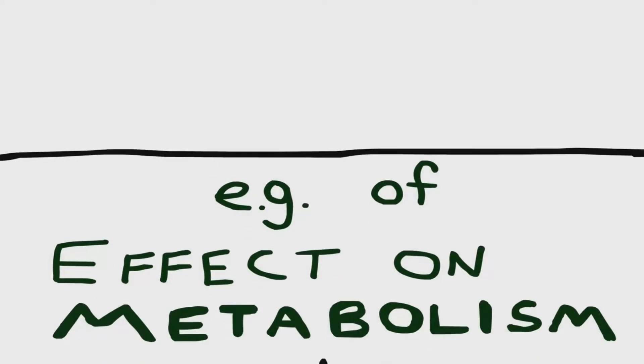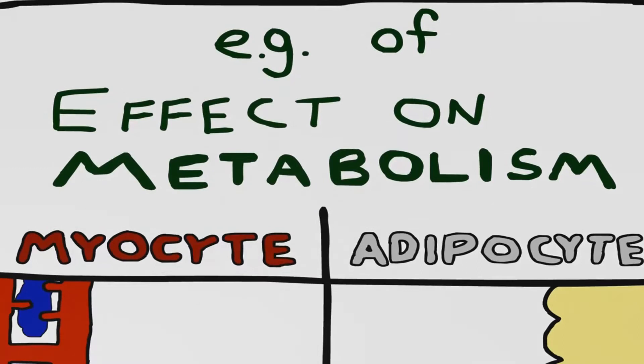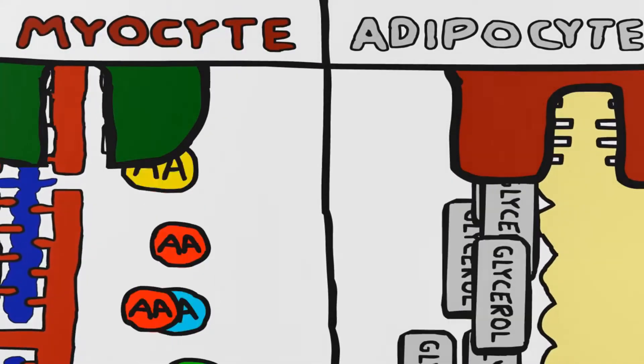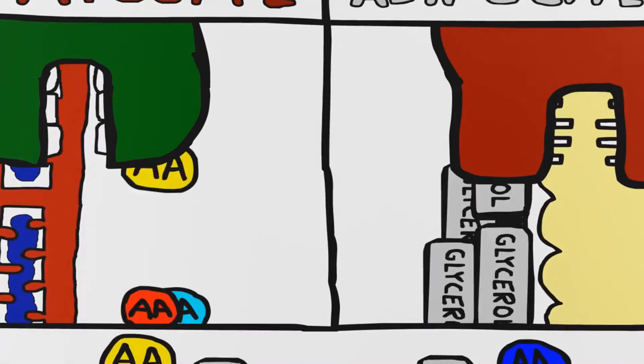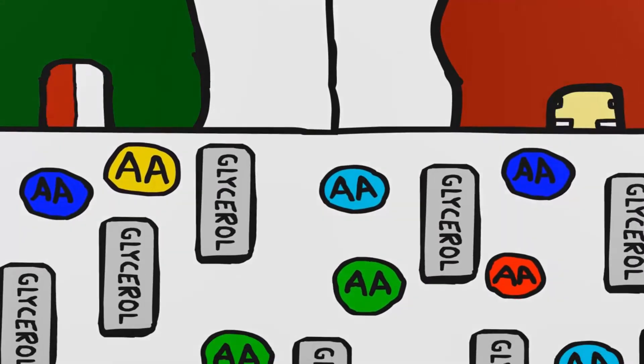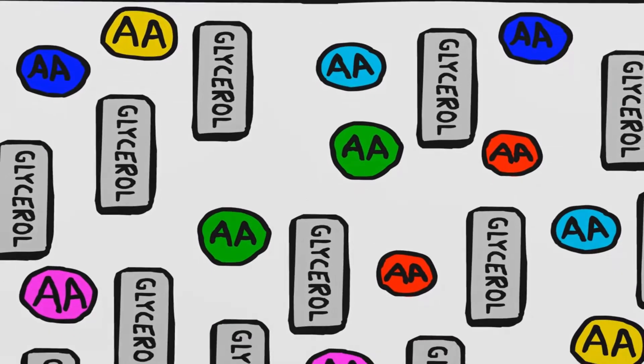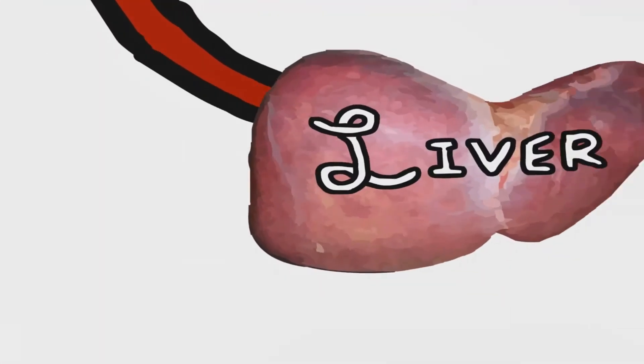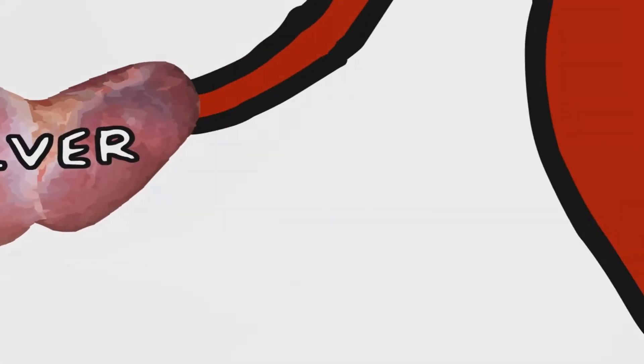These proteins can have a variety of effects on metabolism. For example, they can lead to the breakdown of myocytes and produce amino acids or the breakdown of adipocytes and produce glycerol. So that's the breakdown of muscle and fat to produce amino acids and glycerol, which are then worked on by the liver to produce elevated levels of glucose.